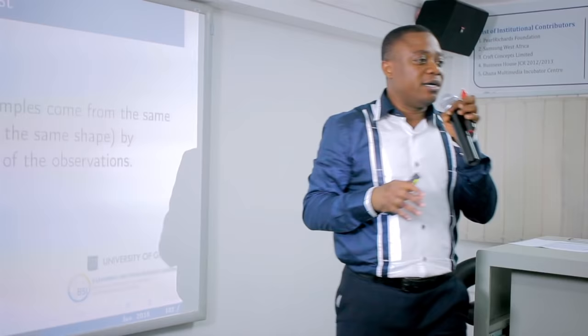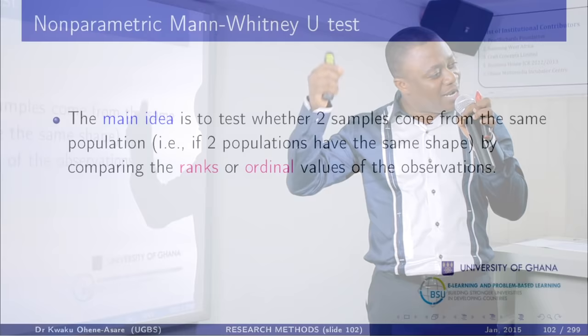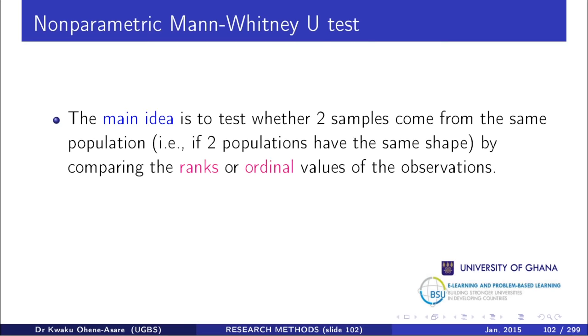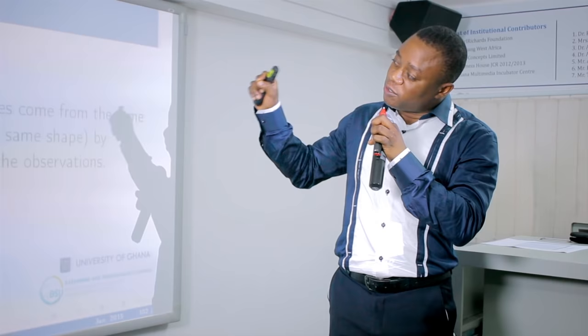You do this by comparing the ranks, or ordinal values, of the observations. When the data is ordinal, non-parametric testing becomes useful. If you use parametric testing when data is not normally distributed, nobody will accept your research. When writing project essays or theses, you must know that non-normally distributed data requires non-parametric testing.